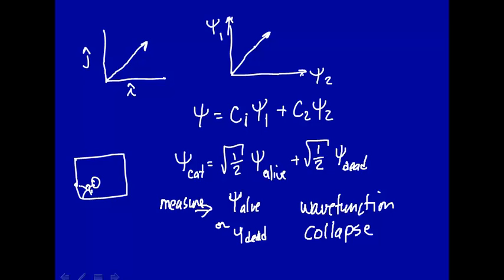Going back to the vector analogy, here is a possible state of a system. When you actually make a measurement, it has to be an eigenvalue corresponding to an eigenfunction. So when you make a measurement, this wave function collapses along one of the basis set eigenfunctions — that's called wave function collapse. There are many interpretations of quantum mechanics, and this is the traditional one, called the Copenhagen interpretation: the act of measurement collapses the wave function onto a particular eigenfunction with the associated eigenvalue.